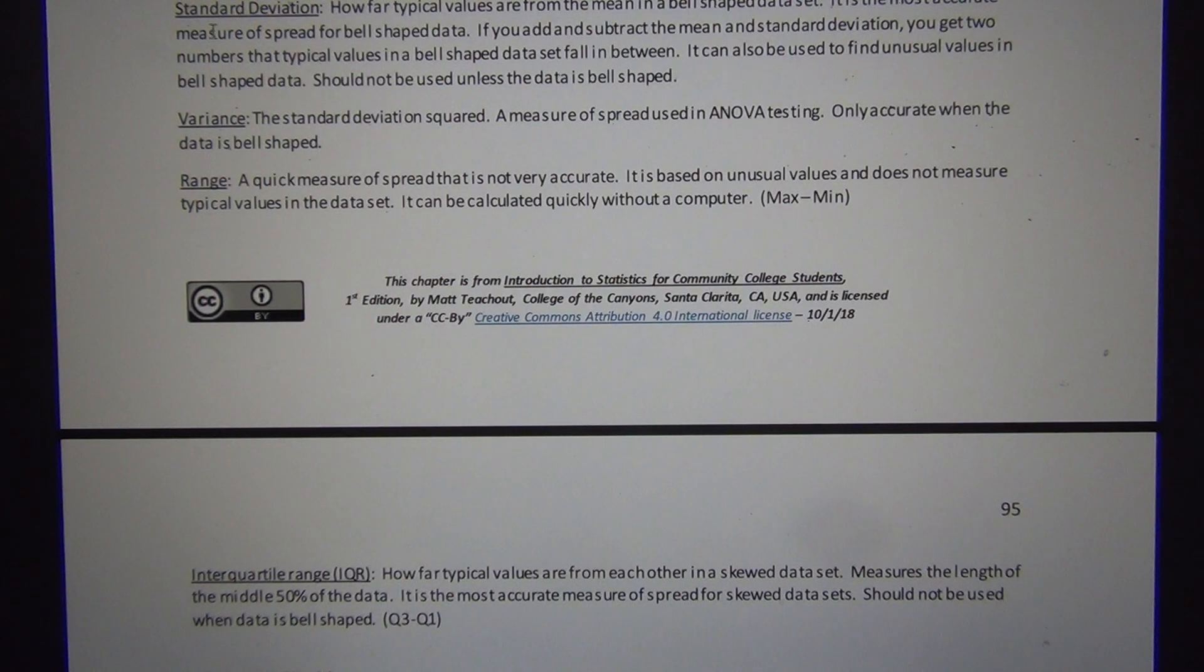So standard deviation is what we use for normal data, interquartile range is what we use for skewed or non-normal data. It measures how far typical values are from each other in a skewed or non-normal data. It's calculated by doing quartile 3 minus quartile 1, that's how it's calculated.